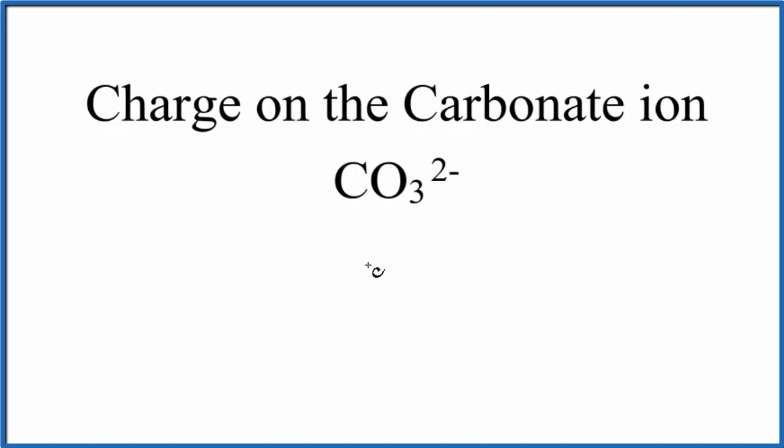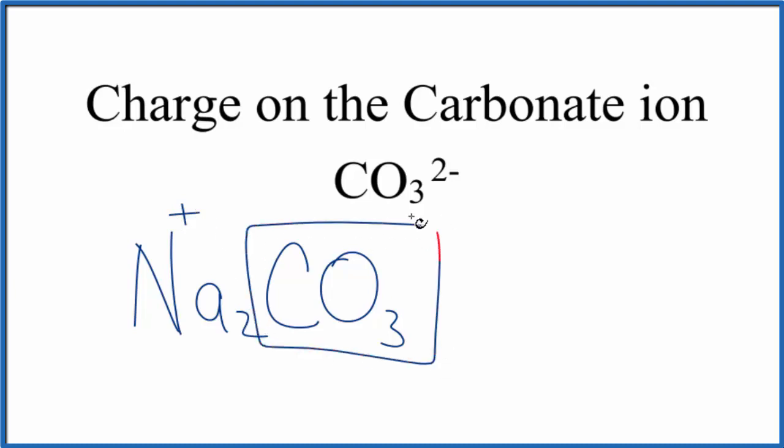One is we could look at substances that have the carbonate ion in them, something like sodium carbonate. Sodium, that's in group one, it has a 1 plus ionic charge, and there's two of them. So the carbonate, the whole thing here, it has to be 2 minus so we have a neutral compound. These balance out.